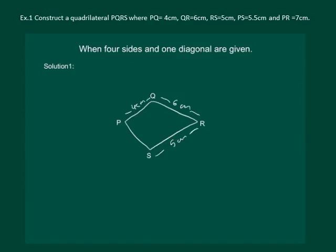And PS is equal to 5.5 cm. And PR is equal to 7 cm. We join PR and it is given to be 7 cm.